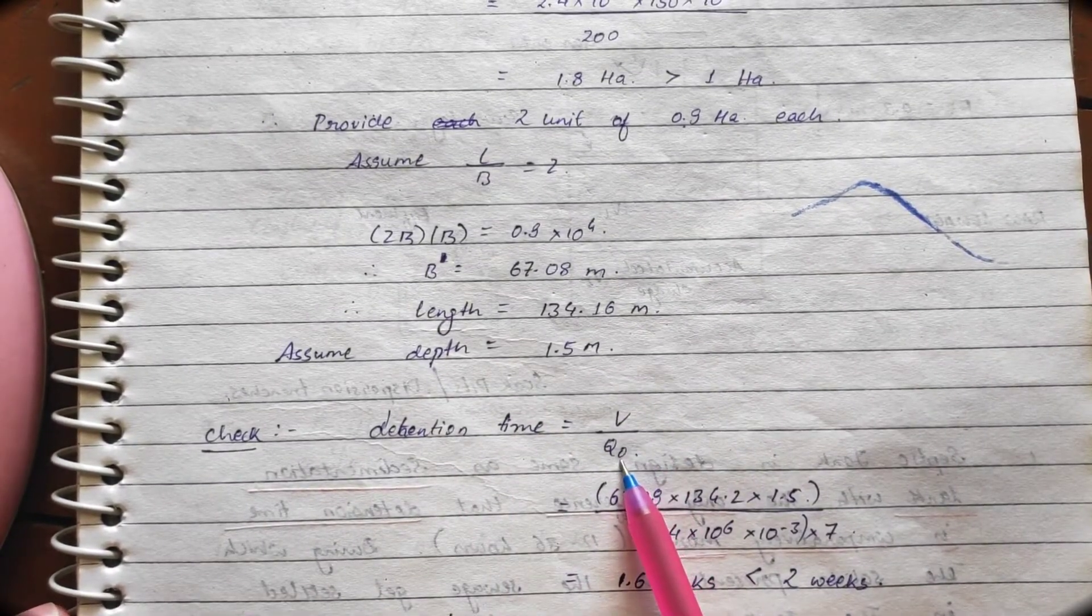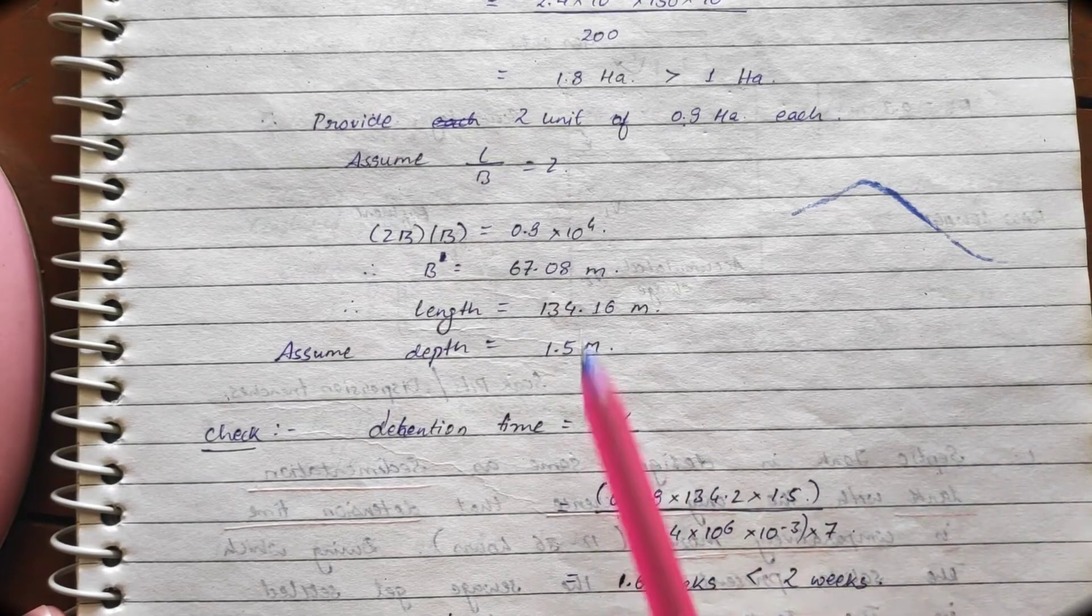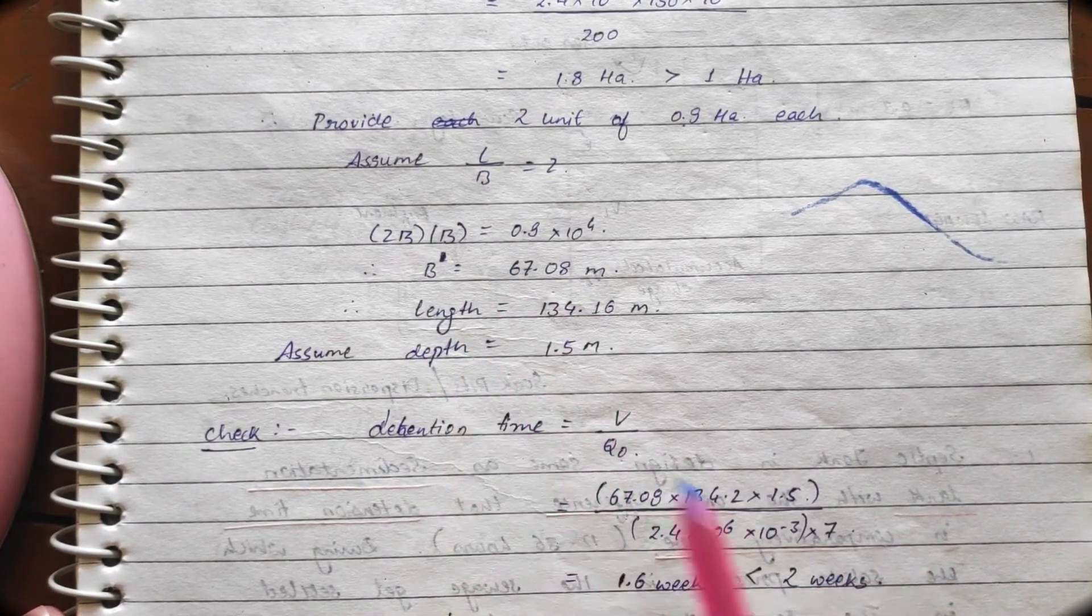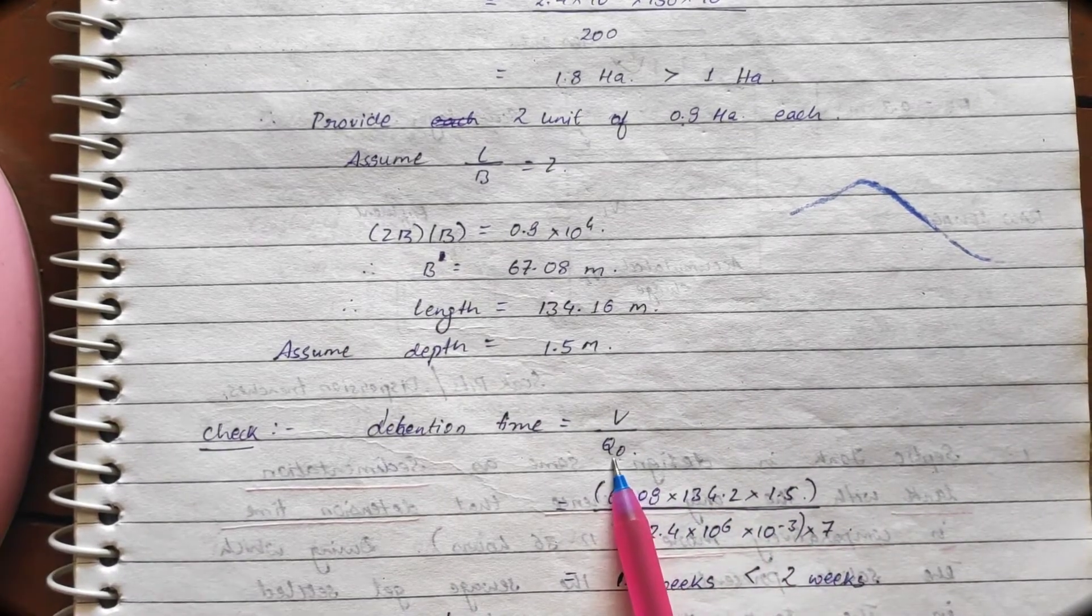Detention time equals to what? V by Q0. So, what is V? V is all this parameter. Length, width and depth. Length, width and depth. Divided by this charge.